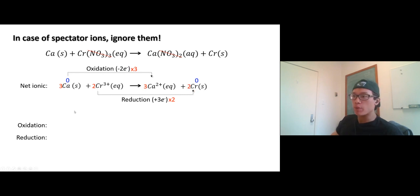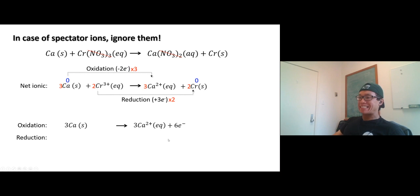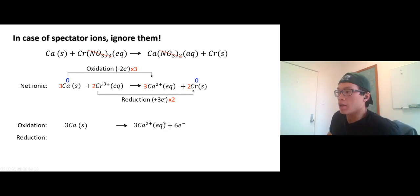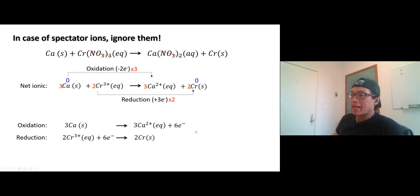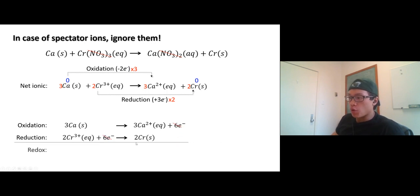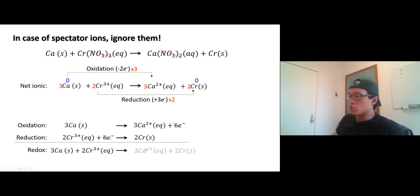Now, oxidation reaction: three calcium become three Ca²⁺ and six electrons are released. Reduction reaction: two Cr³⁺ takes in six electrons and we get two chromium metal. Lastly, let's make the redox reaction — six electrons on the left, six electrons on the right, cancel them out. Combine the whole thing: three calcium plus two Cr³⁺ gives us three Ca²⁺ and two chromium metal.